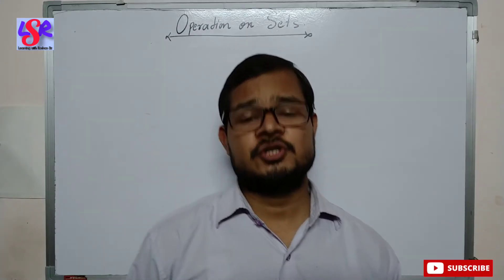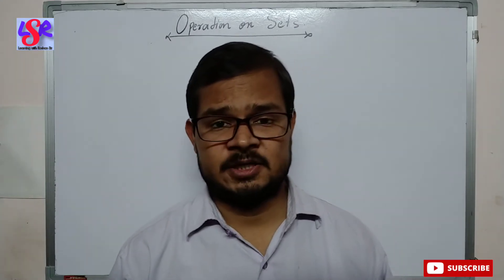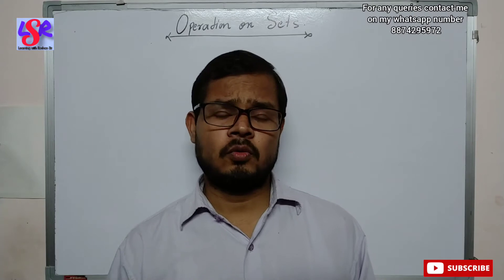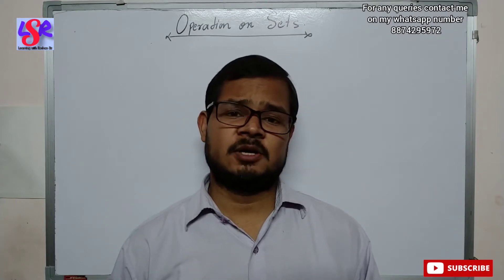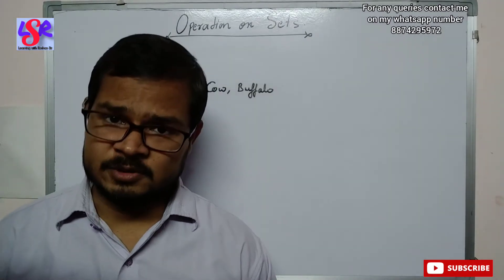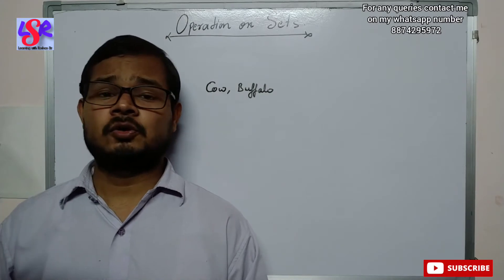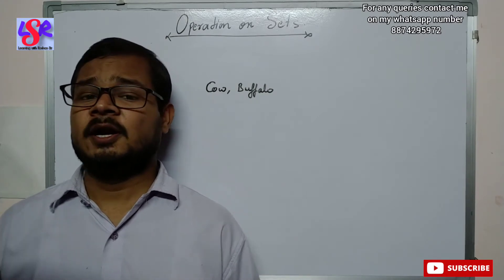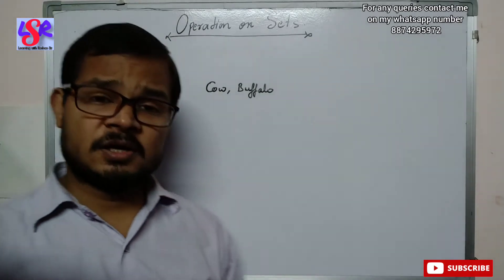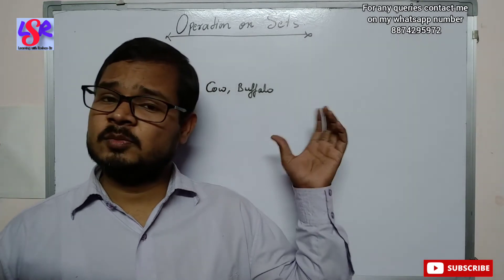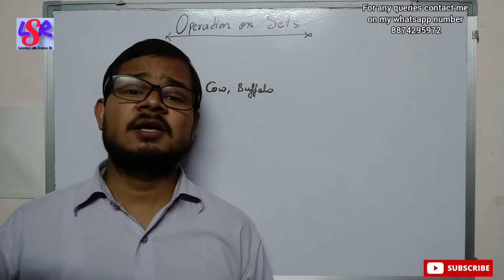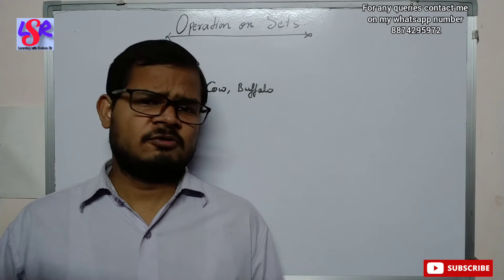Hello everyone, here we are going to start with a new chapter: Operations on Sets. First of all, what is this chapter about? Here we have the names of two animals. Now if I ask you to group them or name them, you will be saying they are milk-giving animals. If we classify or group them as milk-giving animals, that will be okay.